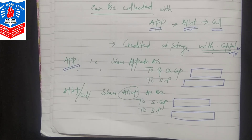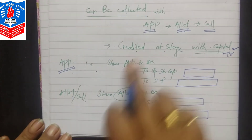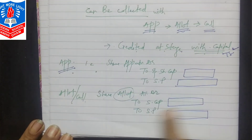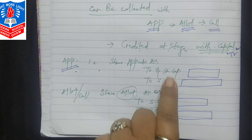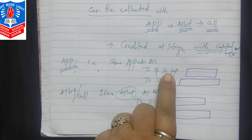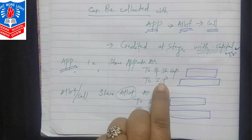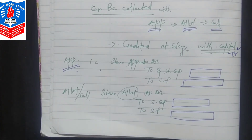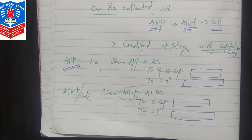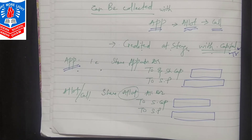Now let us do the practical. For practical, the key point is: when capital is transferred, capital money goes to the capital account, and premium money goes separately to the premium account. To practice this, we will do textbook question number 11. Let us refer directly from the textbook — question number 11.